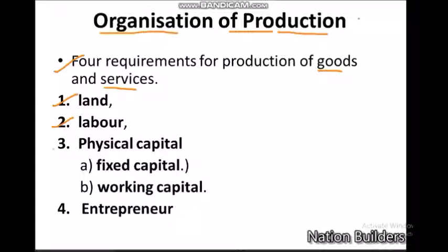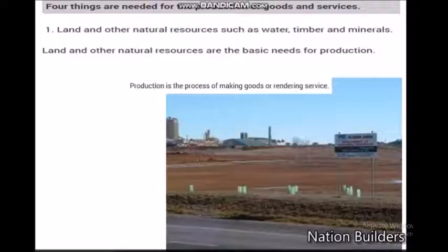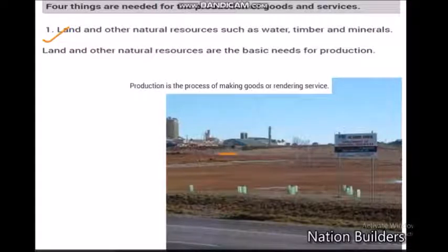labor, physical capital — which is divided into fixed capital and working capital — and the last very important factor, entrepreneur. We are going to see all four in detail. The first requirement is land. Whenever you are making any product, whether in a factory, plant, or farming, land is a very essential thing.